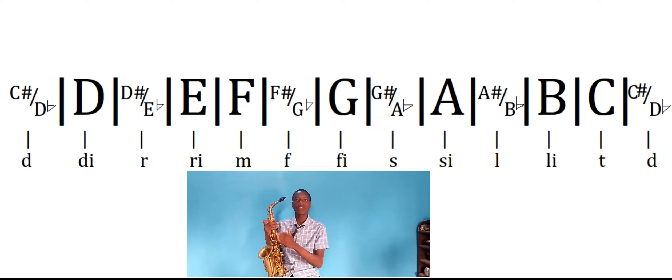The chromatic scale for C-sharp or D-flat is: C-sharp or D-flat, then D, then D-sharp or E-flat, then E, then F, then F-sharp or G-flat, then G, then G-sharp or A-flat, then A, then A-sharp or B-flat, then B, then C, and last one C-sharp or D-flat.